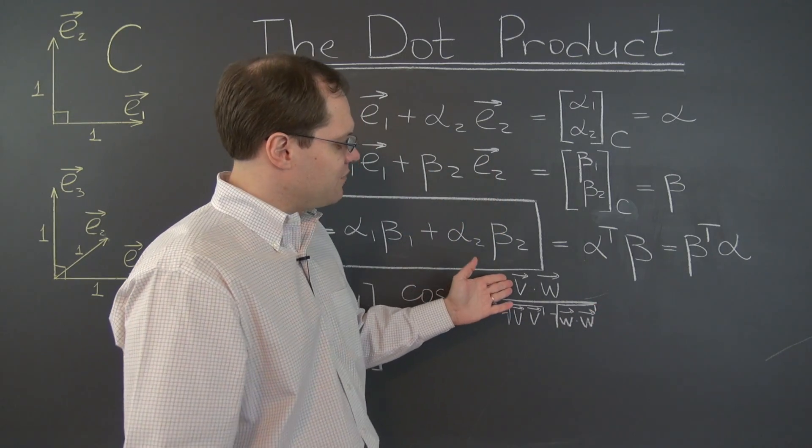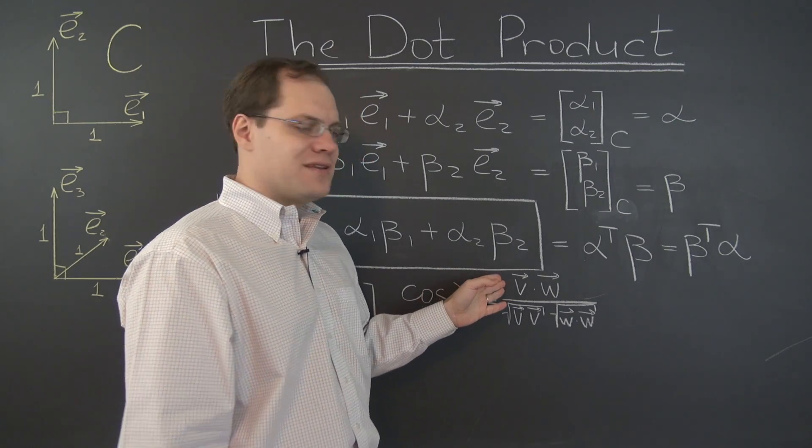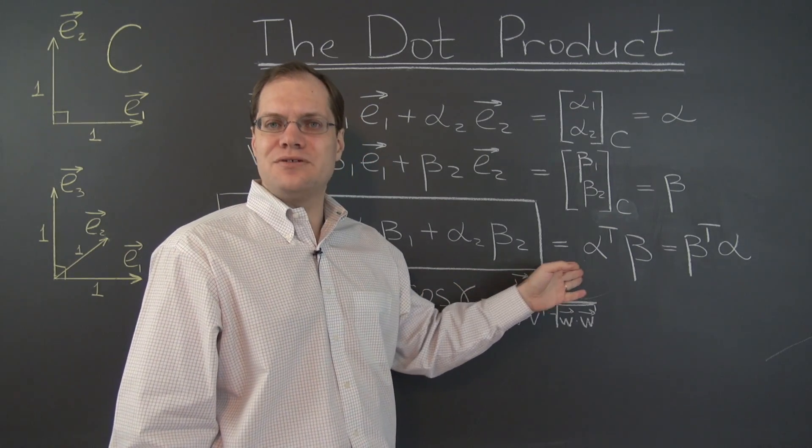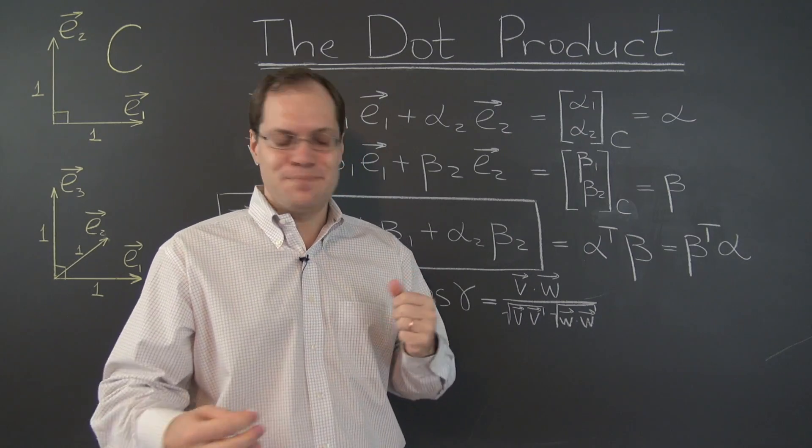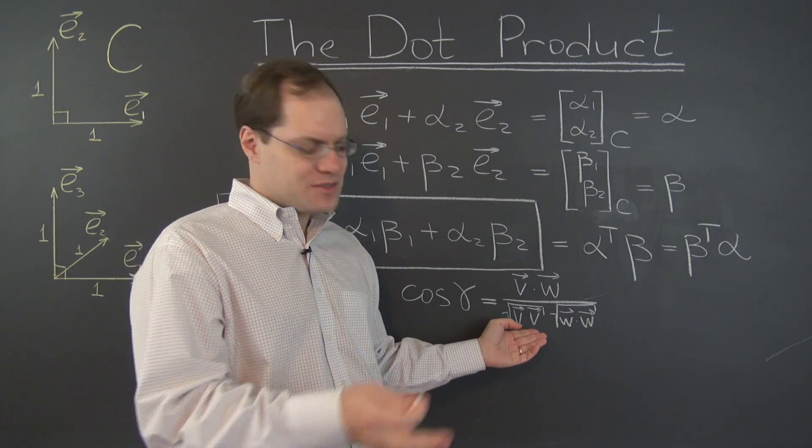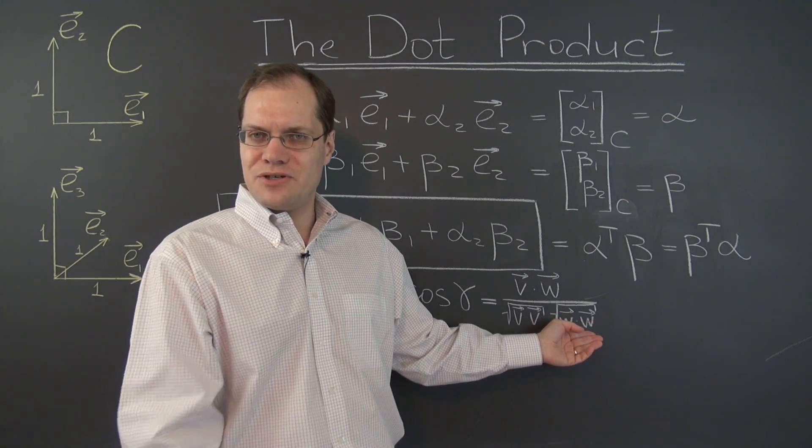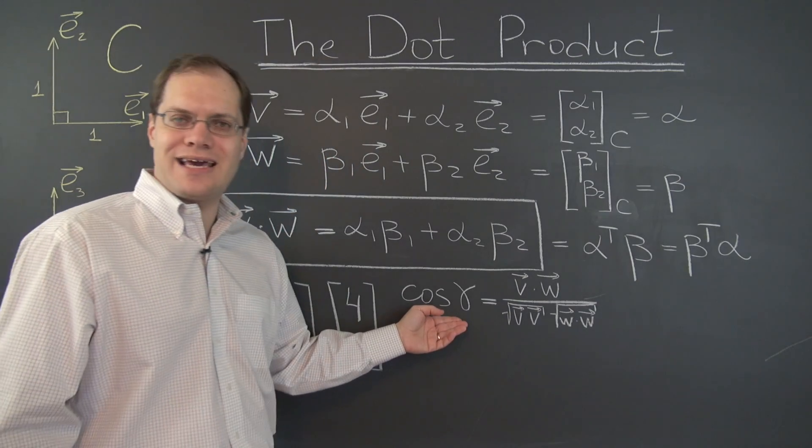Not at all a surprising formula. We have in the numerator the length of v times the length of w times the cosine of the angle between them, and we're then dividing by the length of v so length of v goes away, dividing by the length of w so length of w goes away, so we're left with cosine gamma.